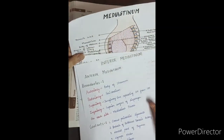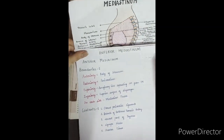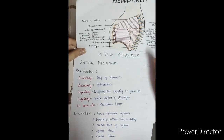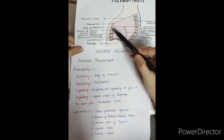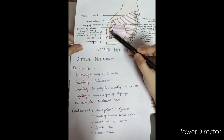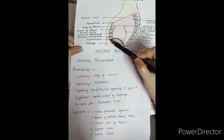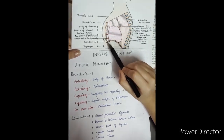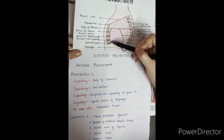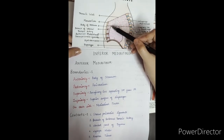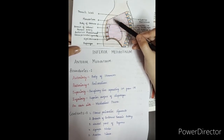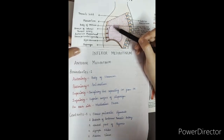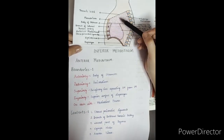Now let's see the inferior mediastinum. In the inferior mediastinum, there are three parts: anterior, middle, and posterior. First, looking at the anterior mediastinum boundaries: anteriorly bounded by the body of sternum and xiphisternum, inferiorly by the superior surface of the diaphragm, posteriorly by the pericardium, and superiorly by the line separating superior mediastinum from the inferior mediastinum. On both sides, the boundary is formed by the mediastinal pleura.